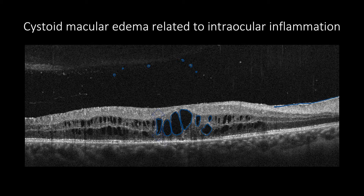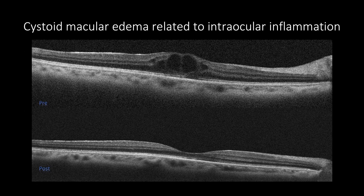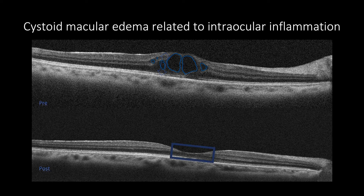In intraocular inflammation cases associated with occlusive vasculitis, it may show increased reflectivity of the inner retinal tissues due to ischemic changes. OCT is essential to monitor the progression of macular changes related to intraocular inflammation, as in this case of cystoid macular edema related to pars planitis showing increased macular thickness with intraretinal cystic formation. Please note the reduced quality of the OCT scan due to vitreal haze.